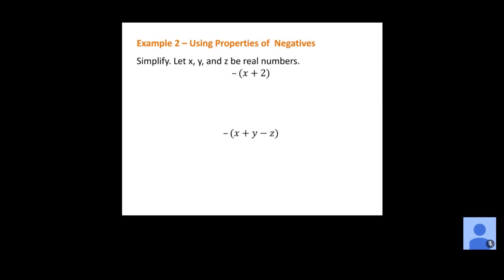Now let's simplify, letting x, y, and z be real numbers. For the first expression, distribute the negative: negative times x gives negative x, and negative one times 2 gives minus 2. For the second one with three terms in the parentheses, distribute the negative to all three: negative times x gives negative x, negative one times y gives minus y, and negative times negative z gives positive z — a double negative becomes positive. Note that the letter z gets a line through it so it doesn't look like a 2.